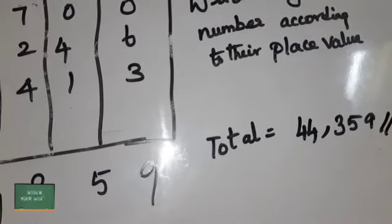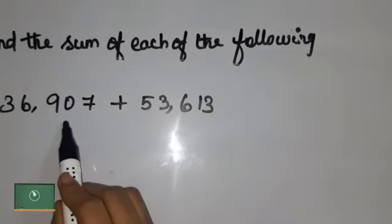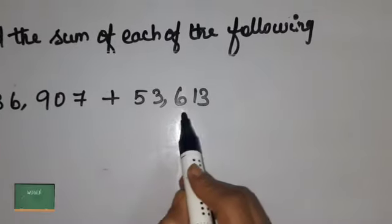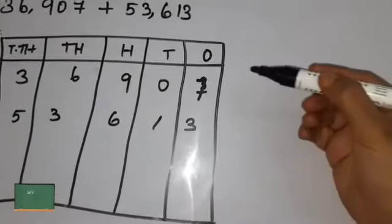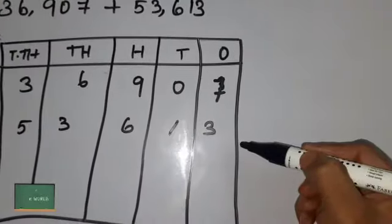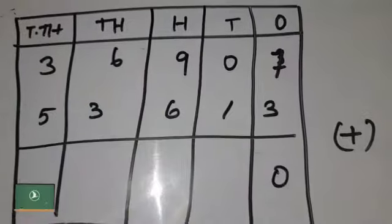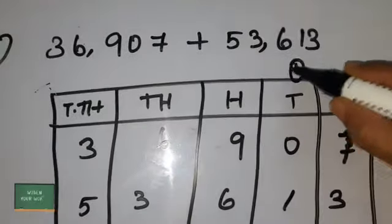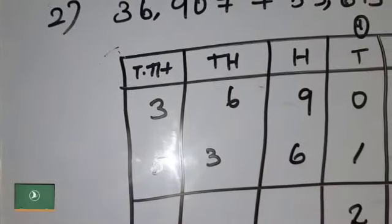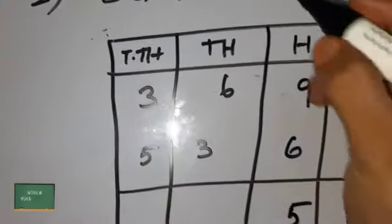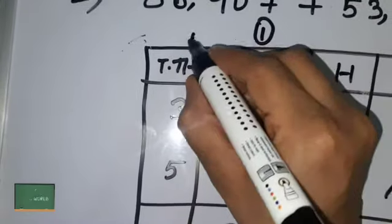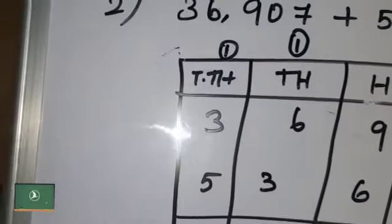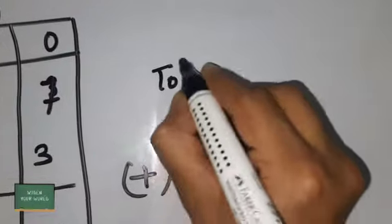Now let's solve another problem based on addition with carrying. The second problem is 36,907 plus 53,613. I have entered the numbers according to their place values. Adding: 7 plus 3 is 10 — 1 is carried to the tens place; 0 plus 1 plus 1 carry is — 9 plus 6 is 15; 5 is written in the hundreds place and 1 is carried to the thousands place; 6 plus 3 is 10 — 1 is carried to the ten-thousands place; 3 plus 5 plus 1 is 9. The total is 90,520.